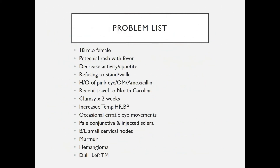To summarize our problem list: an 18-month-old female with petechial rash and fever, decreased activity and appetite, and refusing to stand or walk. She has a history of pink eye and recent otitis media, currently finishing amoxicillin. Recent travel to North Carolina. She has been clumsy for the past two weeks. On exam: fever, increased heart rate, occasional erratic eye movements, pale conjunctiva, injected sclera, bilateral small cervical lymph nodes, a murmur, a hemangioma on her back, and a dull left tympanic membrane.